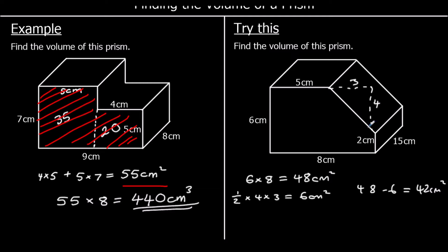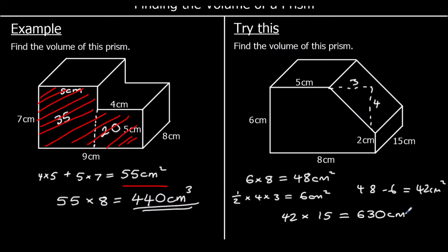So the volume is the area of the front, which is 42, times how far back it goes, which is 15. So 42 times 15: 42 times 10 is 420, half of that is 210, so 42 times 5 is 210. So 420 plus 210 is 630 centimeters cubed.